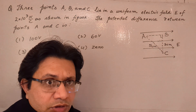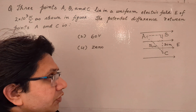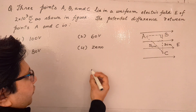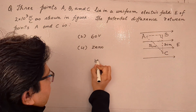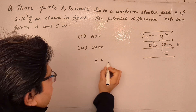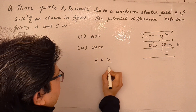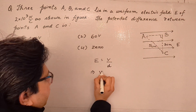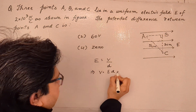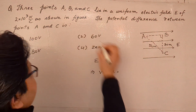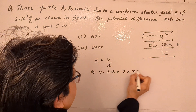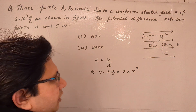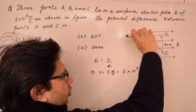This problem is based on the relationship between electric field and potential. That relationship is given by E = V/D, or equivalently V = E × D. The electric field E is uniform with value 2×10³ N/C, and the distance must be taken along the direction of the electric field.